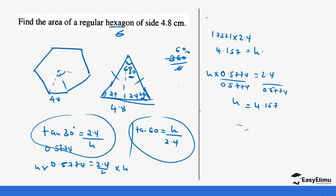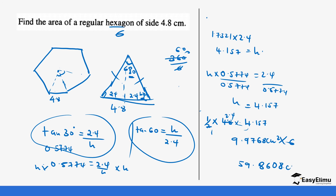Now the area of one triangle is ½ × base × height = ½ × 4.8 × 4.157 = 2.4 × 4.157 = 9.9768 cm². Remember, we have six such triangles, so we multiply by 6: 9.9768 × 6 = 59.8608 cm². That is the area of the regular hexagon.